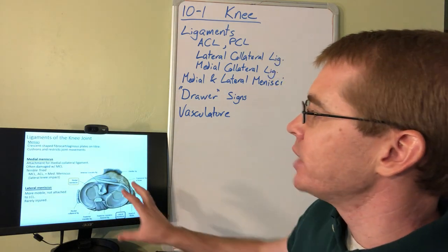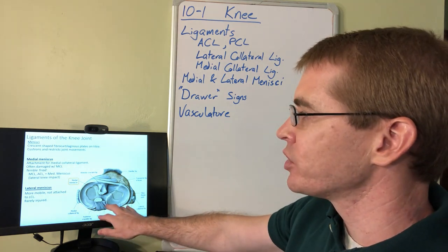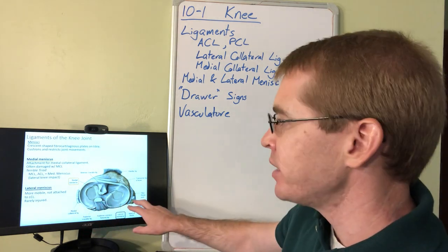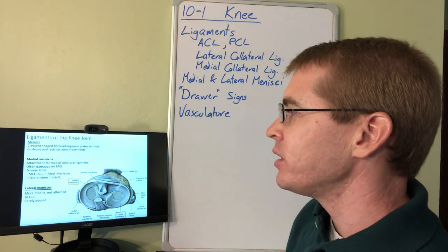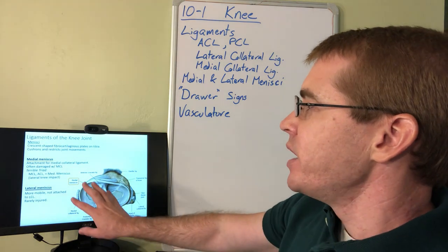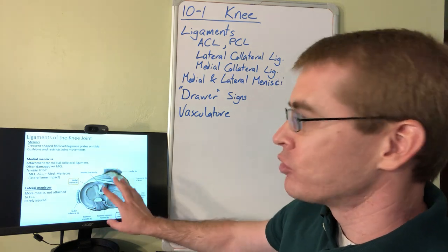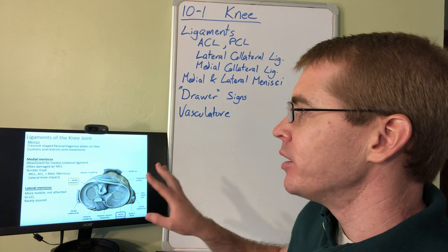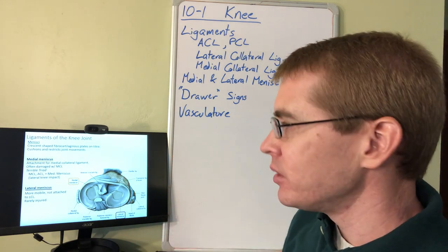Now let's talk about the menisci. The medial meniscus is on the medial side and the lateral meniscus is on the lateral side. The medial meniscus is strongly associated with the medial collateral ligament.